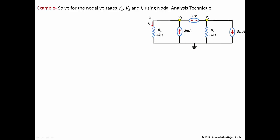For example, using KCL at V1 with the nodal technique, we can define the current through this resistor as V1 over R1. We know the current leaving this branch is negative 2 milliamps, but we don't know the current going through the voltage source because we have no relationship that describes it. A resistor's current is defined by Ohm's law, and a current source defines its current directly, but the voltage source current is not defined.